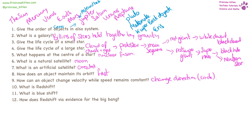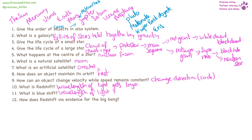Red shift is when the wavelength gets longer. Blue shift is when the wavelength gets shorter. Red shift can provide evidence for the big bang because it shows that stars are moving away from us.